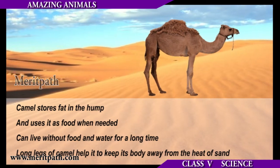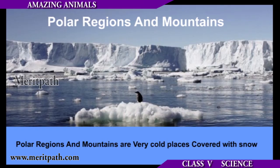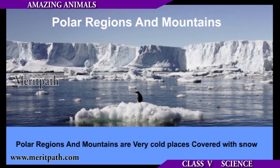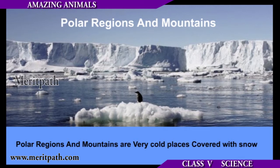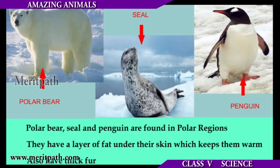Polar regions and mountains are very cold places because they are covered with snow. Animals like polar bears, seals, and penguins are found here, as they have a layer of fat under the skin which keeps them warm.